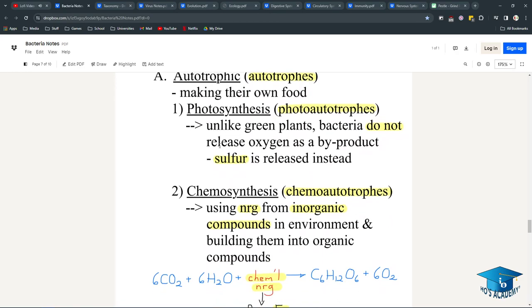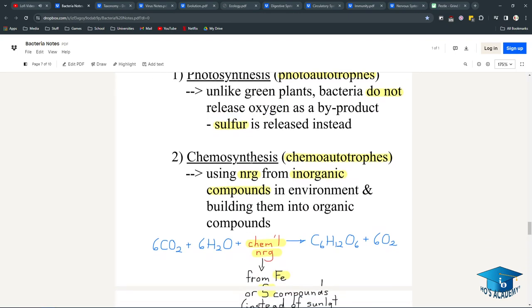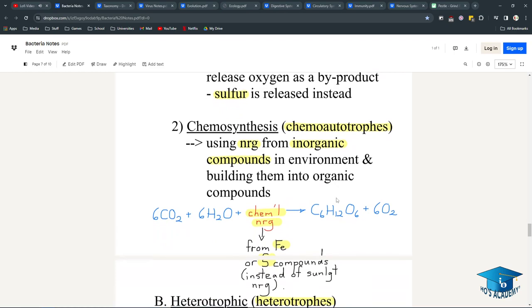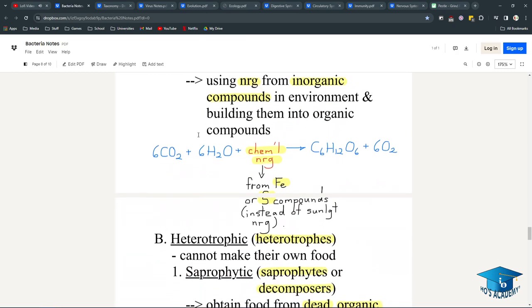The bacteria have their own way of doing things, so instead of oxygen they release sulfur, unlike plants. Through chemosynthesis, they use energy from inorganic compounds in the environment and build them into organic compounds, so they're chemoautotrophs, which means they do it themselves through chemicals.